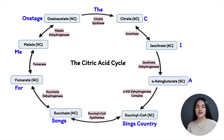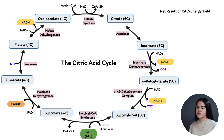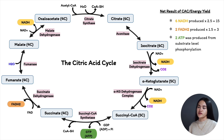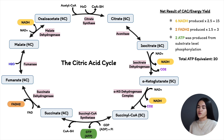Let's determine the energy yield and net result of the cycle. For each NADH, you can make 2.5 ATP equivalents; for each FADH₂, 1.5 ATP. Over two turns of the cycle, we produce 6 NADH (giving 15 ATP), 2 FADH₂ (giving 3 ATP), and 2 ATP from substrate-level phosphorylation — totaling 20 ATP equivalents. Per one turn, the cycle generates 3 NADH, 1 FADH₂, and 1 GTP.